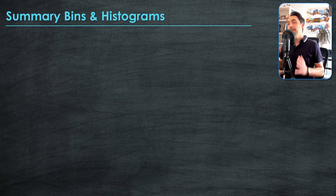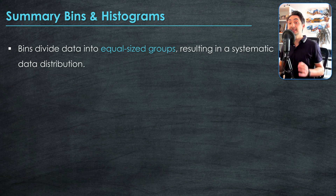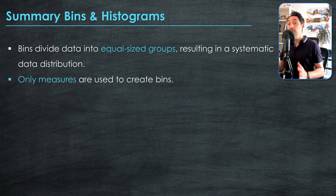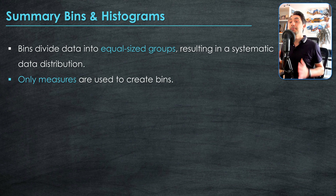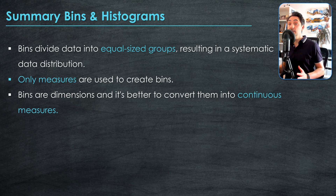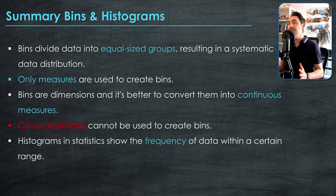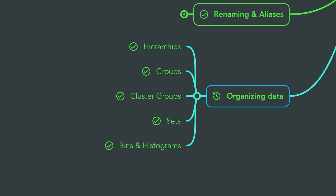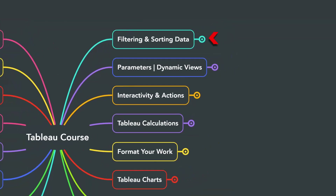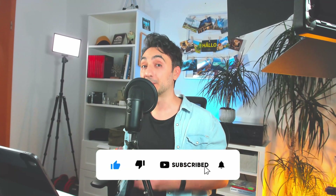To summarize: bins divide your data into equally sized containers resulting in a systematic distribution, and bins are the method of creating groups from measures — you cannot create bins from dimensions. Bins themselves become dimensions, and it's best to convert them to continuous for use in histograms. One limitation in Tableau is that you cannot create bins from calculated fields. The main purpose of bins and histograms is to quickly identify patterns and trends in your data distribution. That concludes bins and histograms, and with it, everything about organizing and customizing data in Tableau. Next, we'll learn how to filter data using different techniques.